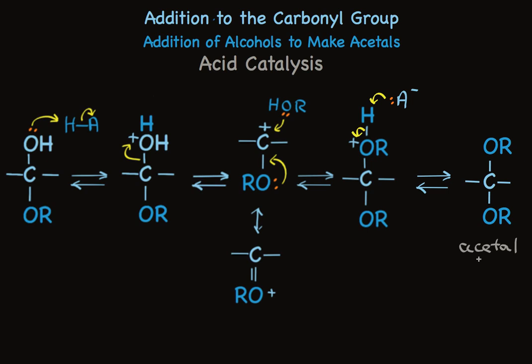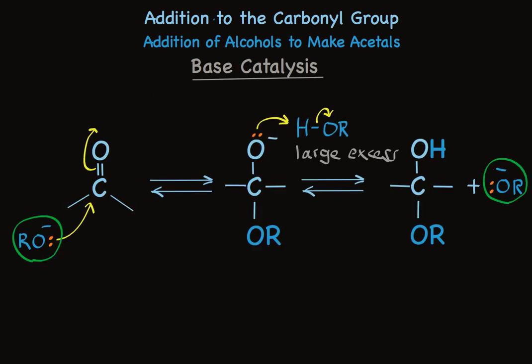So when we want to make acetals, we use acid catalysis, and acetals are formed in very high yields under these conditions. It's not possible to make hemiacetals under acid catalysis because the hemiacetal continues to react. In contrast, with base catalysis, we make only hemiacetals — not acetals — in a simple two-step reaction that produces very high yields of hemiacetals. Whether you want to make hemiacetals or acetals dictates the type of catalysis you'll choose to use. In either case, you can make very high yields of the desired product.